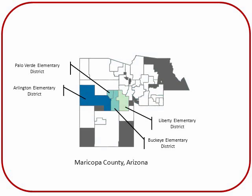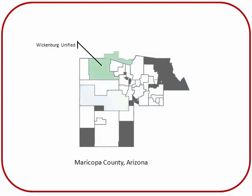SAPI estimates are divided among overlapping school districts based on the age ranges that each district covers. The Wickenburg Unified School District crosses the county border, extending into Yavapai County. SAPI estimates are derived separately for the piece of a school district in each county, and the estimates for each piece are added at the end to produce an estimate for the entire school district. Because school district boundaries often change, the SAPI program checks with each state's education officials every other year to update boundary definitions.